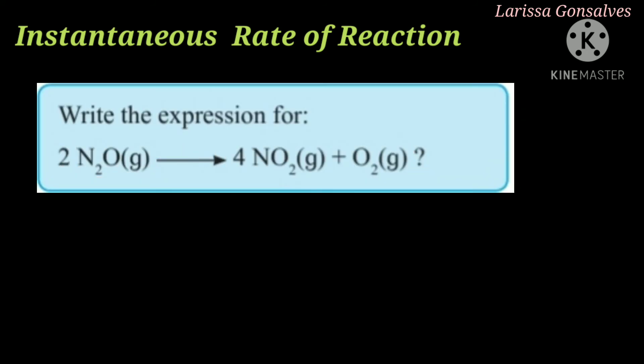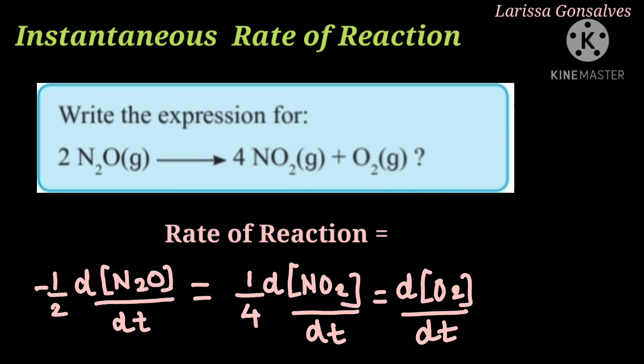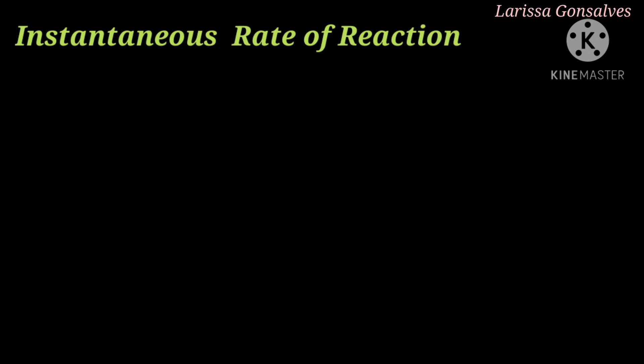Here is another example: 2N₂O₅ → 4NO₂ + O₂. The instantaneous rate of reaction is: −(1/2)d[N₂O₅]/dT = +(1/4)d[NO₂]/dT = +d[O₂]/dT. This is how you find the instantaneous rate of reaction.